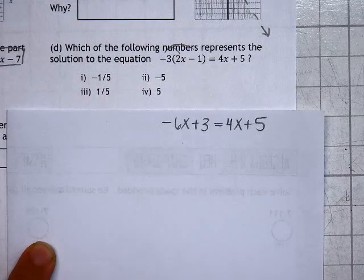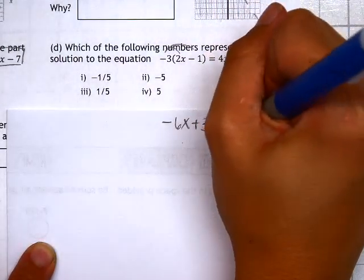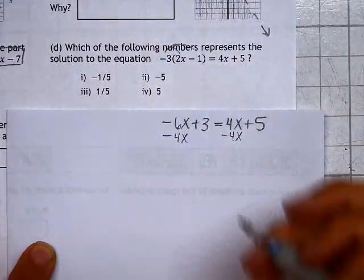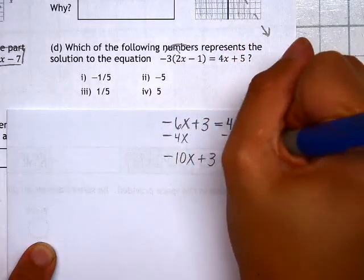Now to get x by itself, we'll need to move the 4x over to the left side by subtracting it, doing the opposite, which now gives us negative 10x plus 3 equals 5.